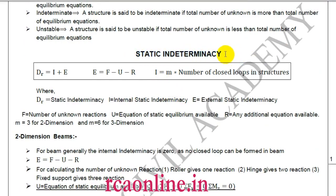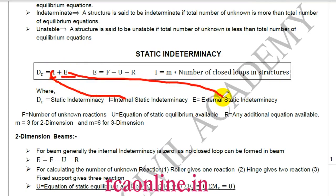This is formula-based. In GATE and engineering services exams, static indeterminacy appears as a one-mark question, so time is a factor. Static indeterminacy can be defined as I plus E, where I is internal static indeterminacy and E is external static indeterminacy. If applying equilibrium equations alone can solve the structure, it is externally determinate; otherwise, additional equations are needed.